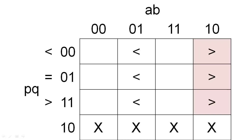When the current most significant bit of A is equal to the current most significant bit of B, the output should reflect the result of previous comparisons. When previous comparisons have revealed that A is less than B, the comparisons should continue to yield that A is less than B. Similarly, when previous comparisons have revealed that A is greater than B, the comparisons should continue to yield that A is greater than B. Finally, when previous comparisons have revealed that A is equal to B, the comparison should continue to yield that A is equal to B.